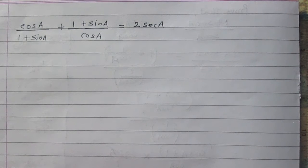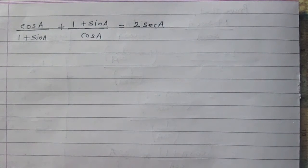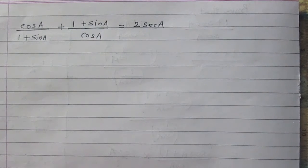cos A divided by 1 plus sin A, plus 1 plus sin A whole divided by cos A, is equal to twice of sec A.